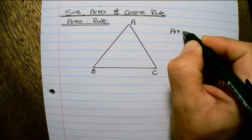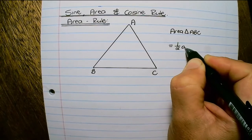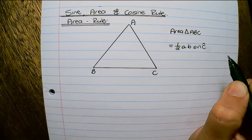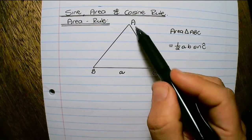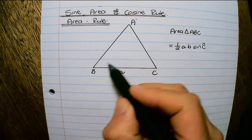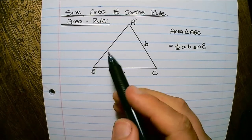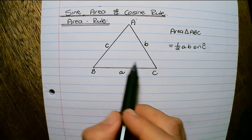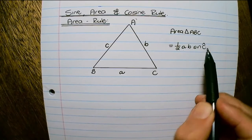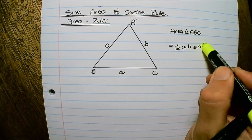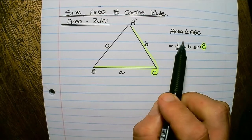The area of triangle ABC can be found by saying half AB sine of angle C. Lowercase a refers to the length of BC, the side opposite angle A. Lowercase b represents side AC, which is opposite angle B. And lowercase c is opposite angle C. So the area of the triangle is half AB sine C, where angle C is between the two sides used to find this length.